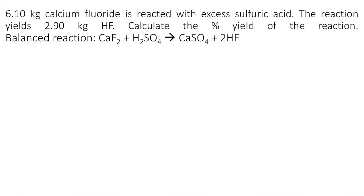6.10 kilograms of calcium fluoride is reacted with excess sulfuric acid. The reaction yields 2.90 kilograms of HF. Calculate the percent yield of the reaction. We are also given the balanced chemical reaction as you can see on the screen.